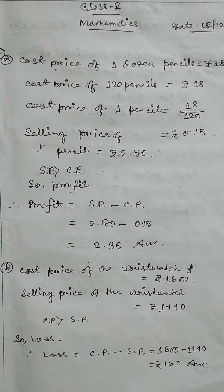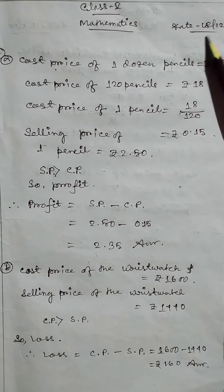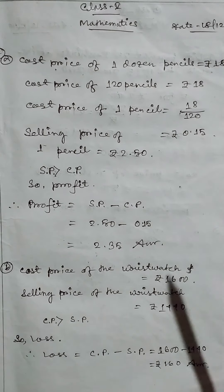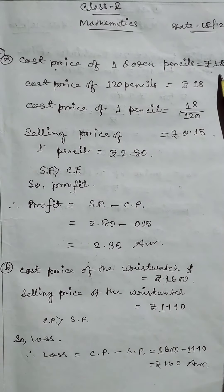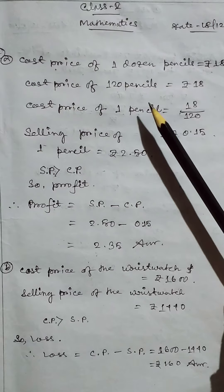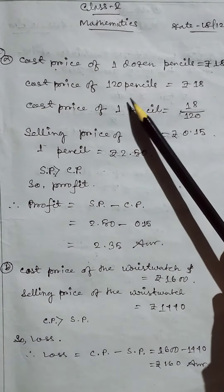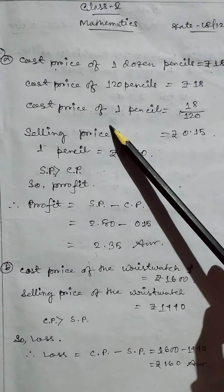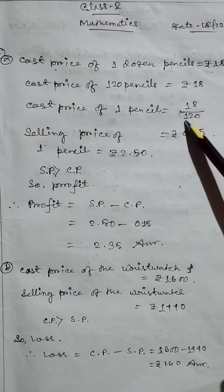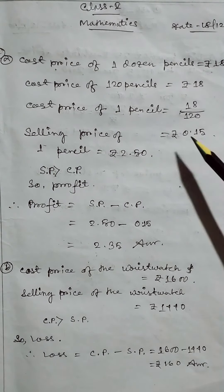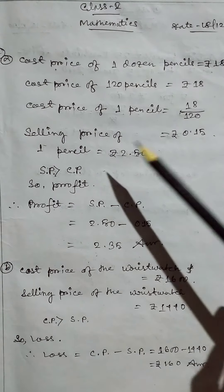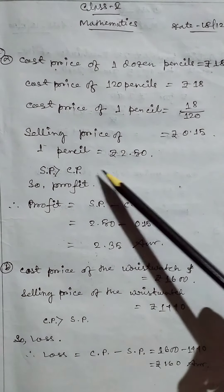Hello students, good morning. Class 5 Mathematics, date 18th of December 2020. Problem 8A: Cost price of one dozen pencils equals rupees 18. So cost price of one pencil is 18 divided by 120, which equals rupees 0.15.